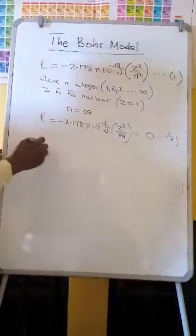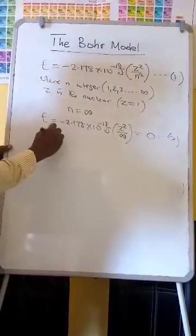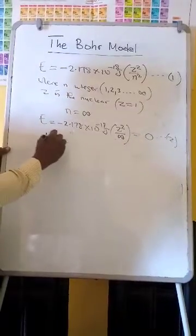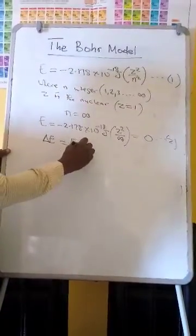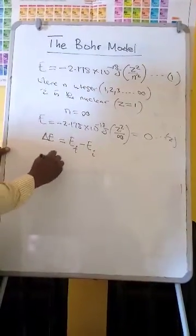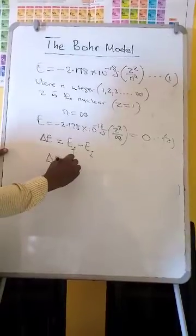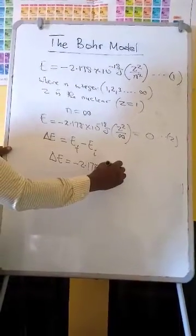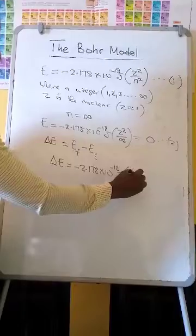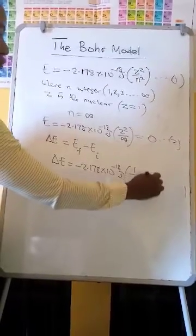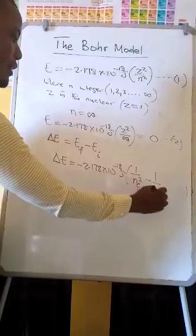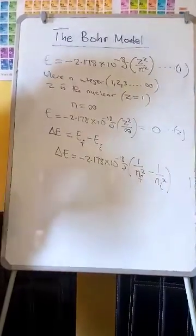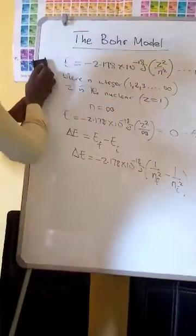So the change in energy between two energy levels can be calculated as the difference between energy in the final state minus energy in the initial state, which equals negative 2.178 times 10 to the minus 18 joules times Z squared, multiplied by the quantity 1 over n-final squared minus 1 over n-initial squared. This is the equation we use to calculate energy changes when the electron changes states.